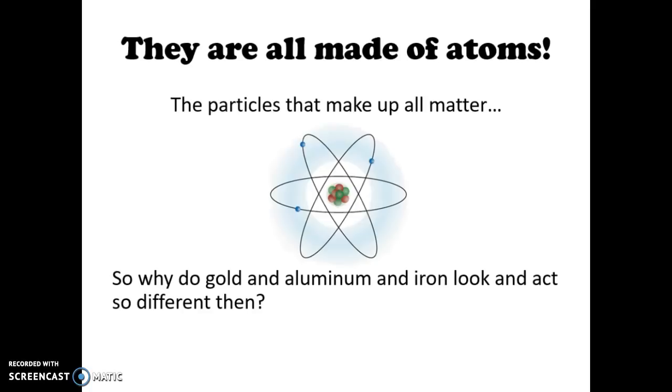Why is gold shiny and gold, aluminum is a silver color and we can make sheets out of it, iron is a little bit blacker color, it's really strong? Why do they look so different from one another? We would say that they're different from one another because each one is made from a different atom. We've got gold atoms, aluminum atoms, and iron atoms.